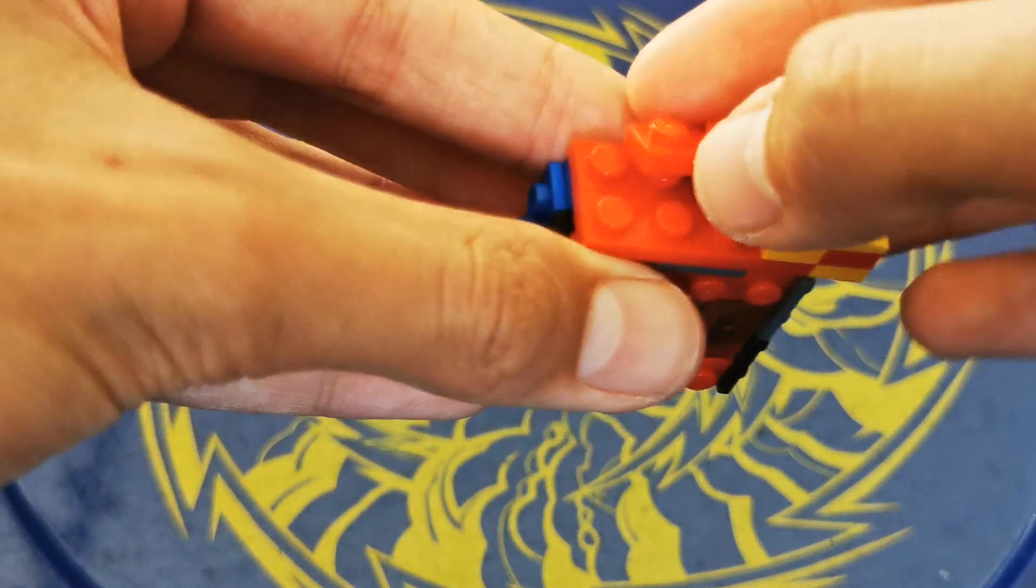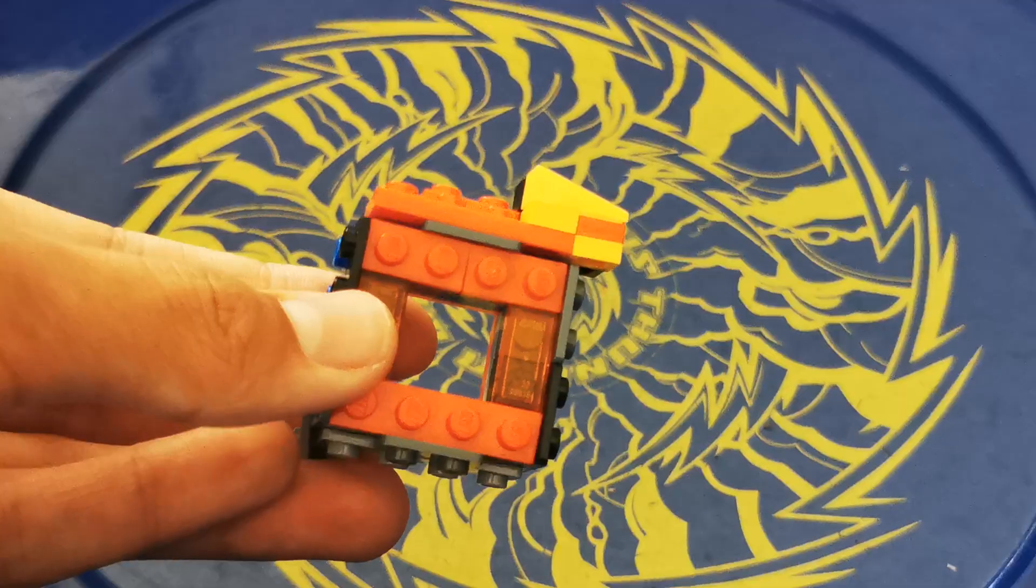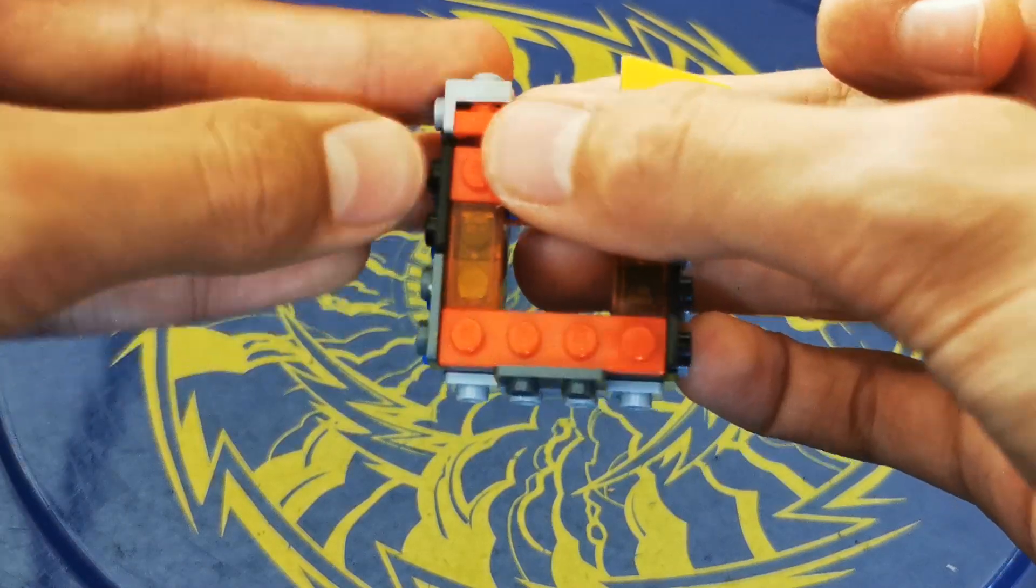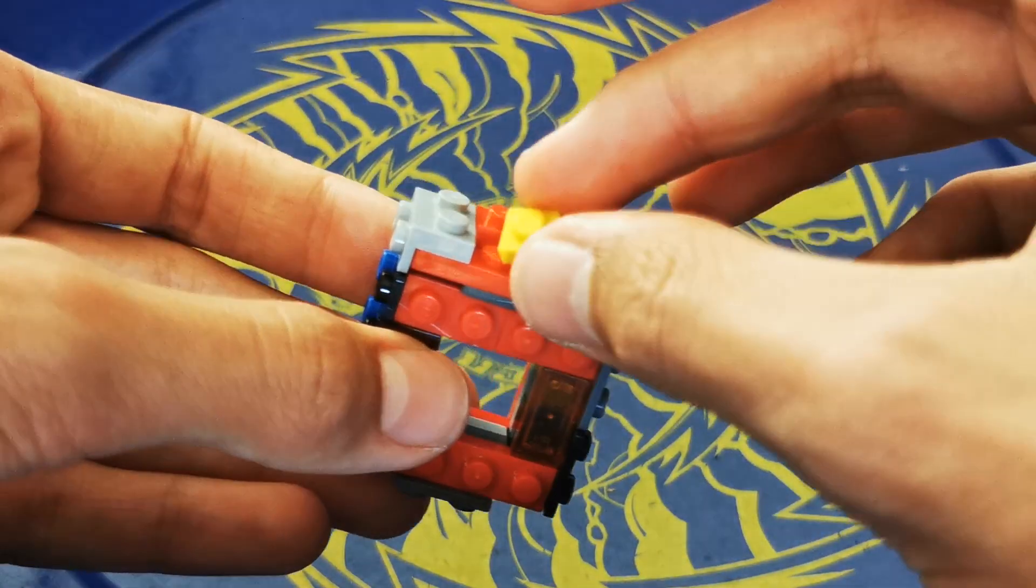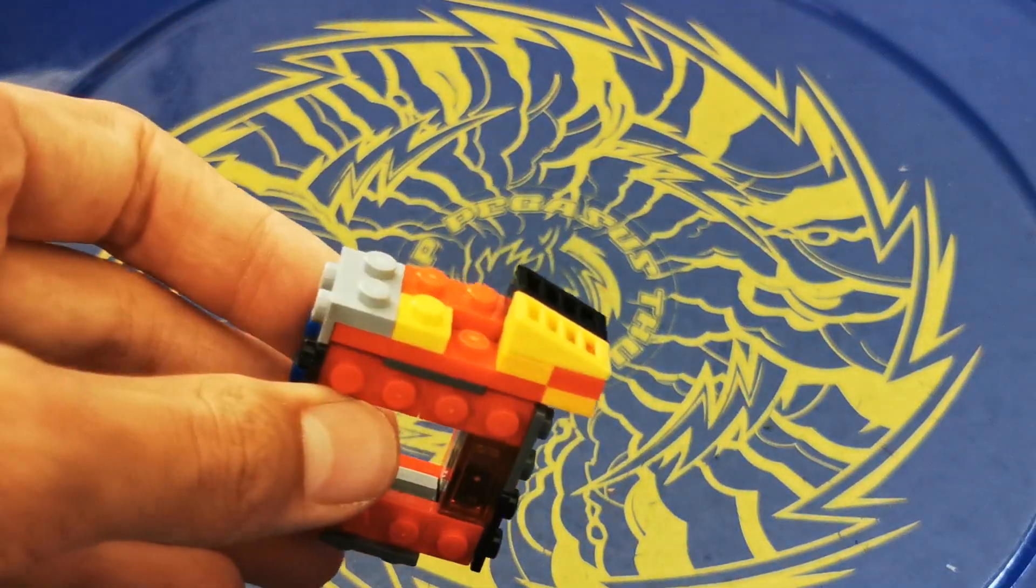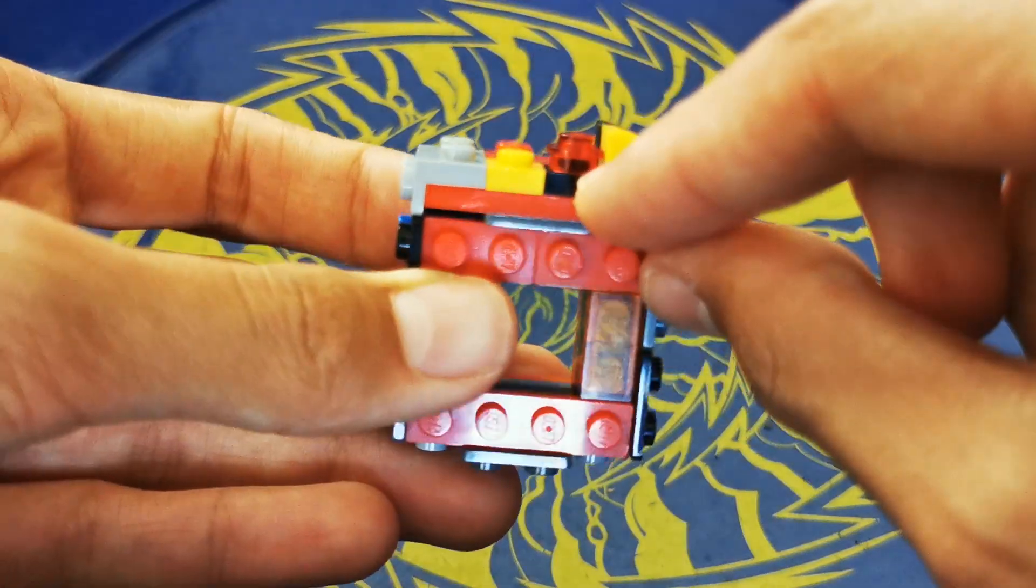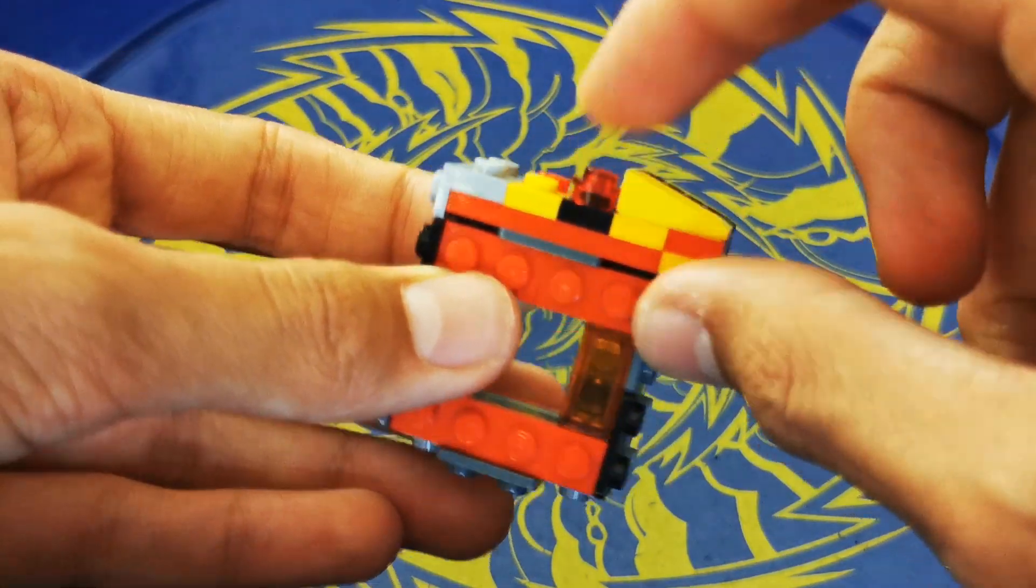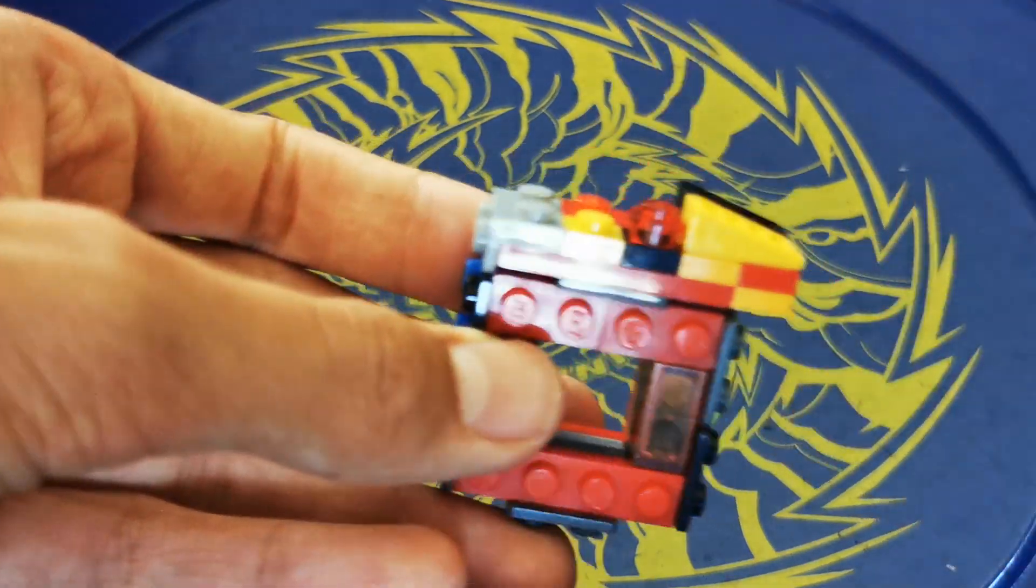Then grab a 1x2 tile in red and put it there. Then grab a bracket facing downwards like this with two studs there and two studs there, and a 1x1 yellow stud there. And a 1x1 black square stud topped off with a 1x1 stud in see-through red.